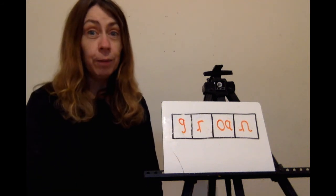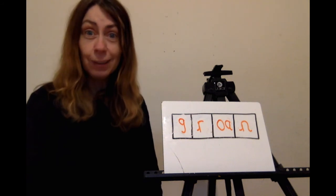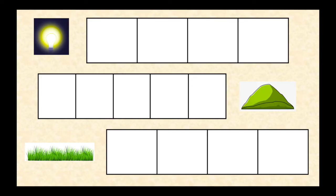Well done everyone. Thank you for helping me write those words. Let's go and write some more words now. Can you write these words? Bright — the light is very bright. Steep — this hill is very steep. Green — the grass is green. Remember to say the word then use thread fingers to help you write the word.